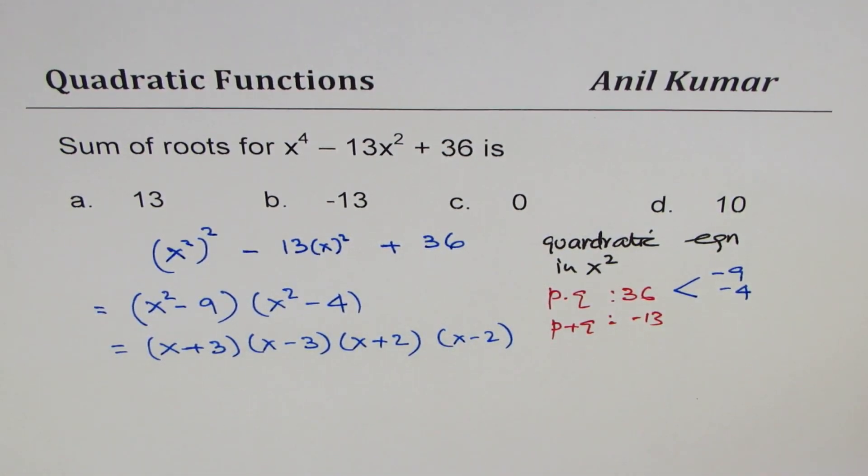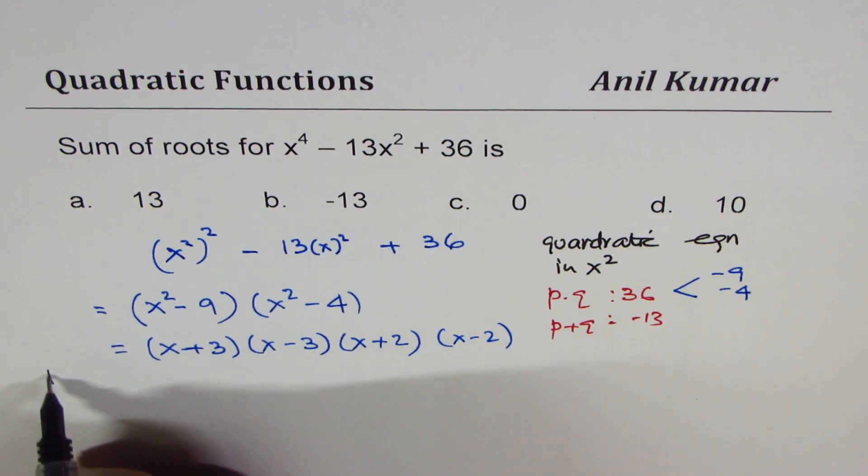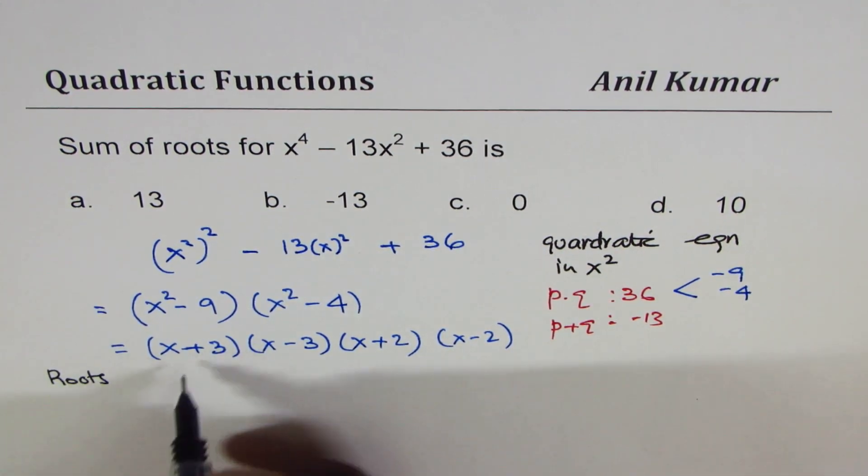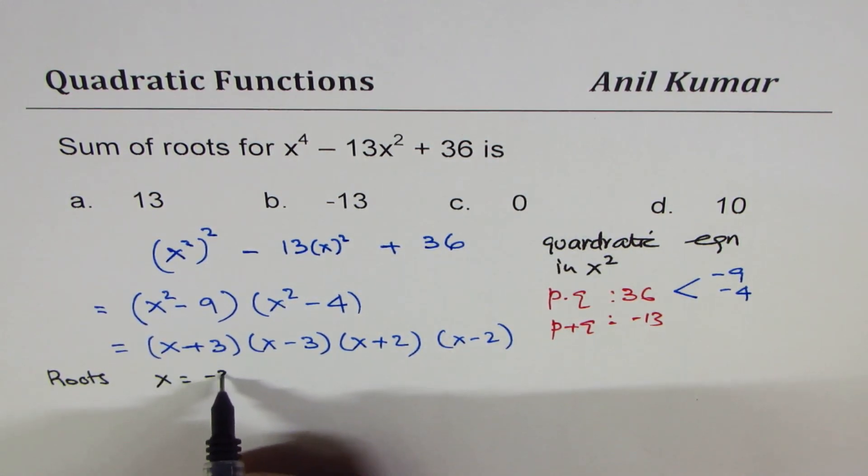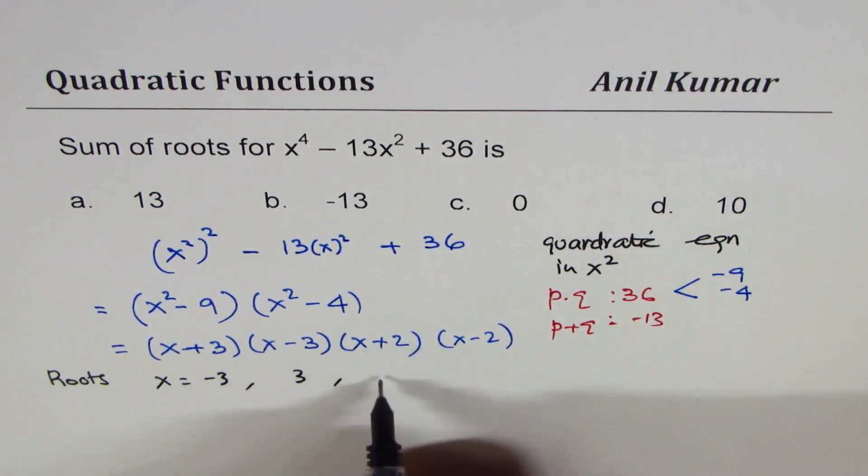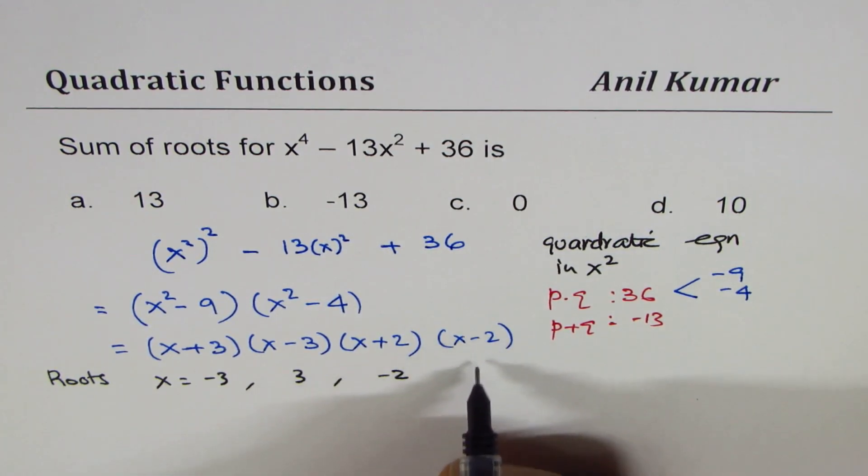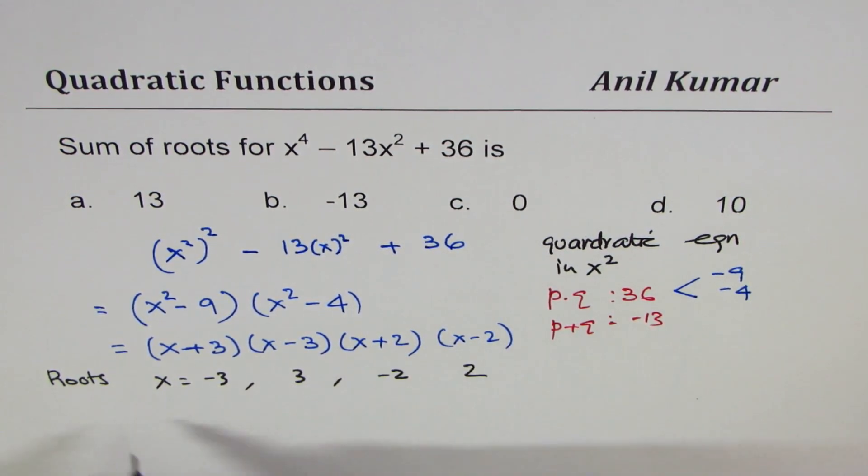Now what are the roots? Let's look at the roots. Roots are when x plus 3 is 0. So first root here is minus 3. Here it is 3. Here it is minus 2. And then we have 2. Now you can see what is the sum of these roots. Minus 3 plus 3 is 0. So we have minus 3 plus 3 plus minus 2 plus 2. And the sum is 0.